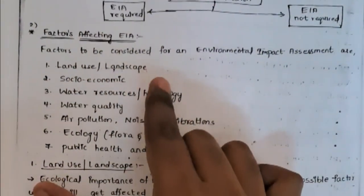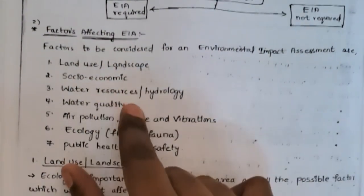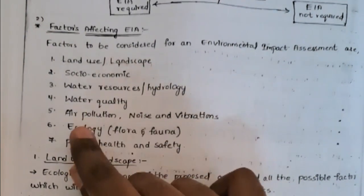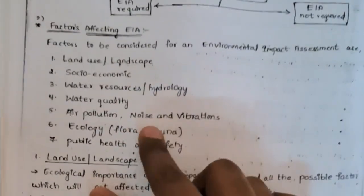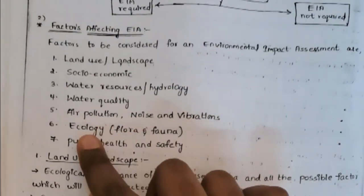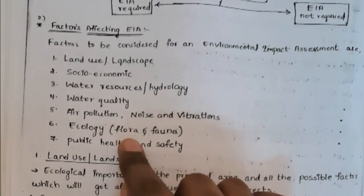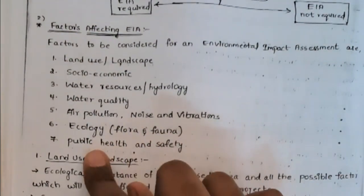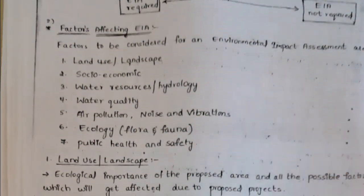The topics covered include: land use, landscape, socio-economic, water resources and hydrology, water quality, air pollution, noise and vibrations, ecology, flora, and public health and safety.